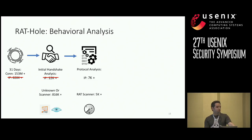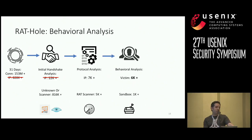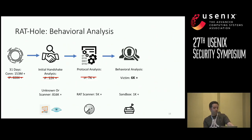Now we were down to 7,000 potential victims, but there are antivirus companies that oftentimes run malware in sandboxes. We had a suspicion that some of these IP addresses were sandboxes and not real victims. We turned to behavior analysis of malware to detect these sandboxes. The key feature we found is that antivirus companies run malware samples for only a short period of time, because they have millions of samples to run and limited VM resources. With this, plus other sandbox detection profiles, we removed some of these IP addresses, leaving us with 6,000 victims.